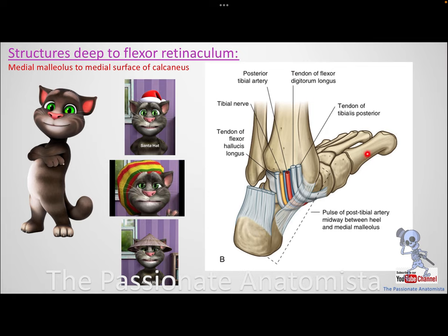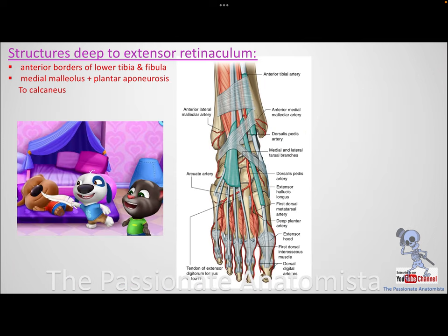For the extensor retinaculum, there are two types of fibers: one connecting the distal ends of tibia and fibula, and another that is Y-shaped, running from the calcaneus to the medial malleolus and down to the plantar aponeurosis. These form the upper and lower extensor retinacula.